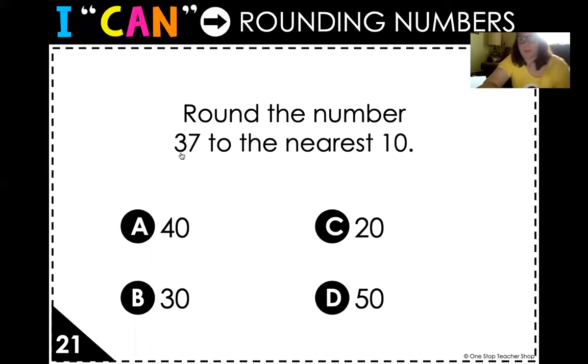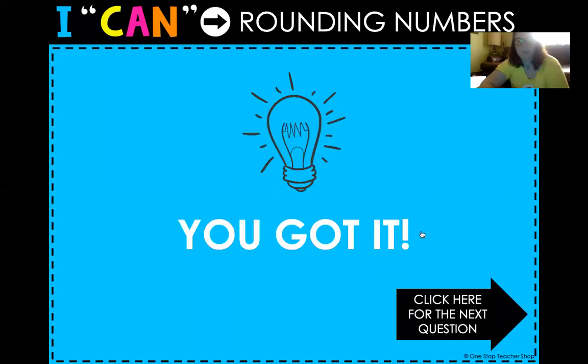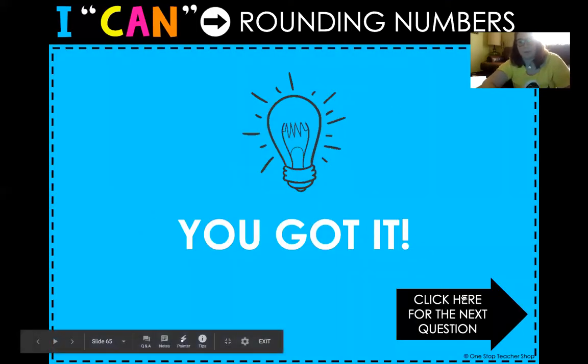So our answer is either going to be 30 or 40. But we look in our ones place. We have a 7 in the ones place. So five through nine, we're going to climb the vine. We're going to round up to 40. There we go. We got it. All right. So that's how you play the game.